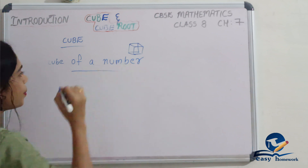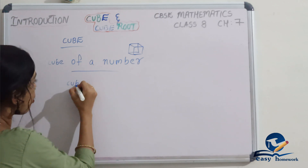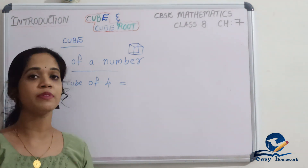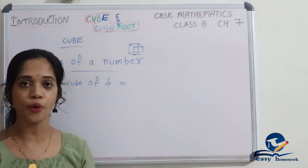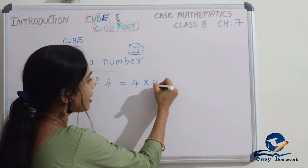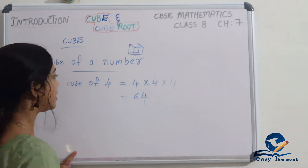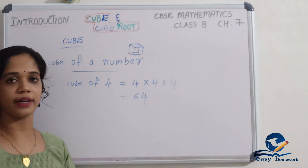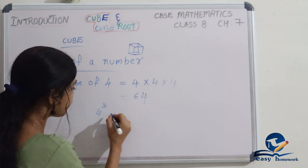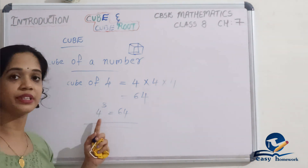How do you say a number is a cube? Let's say 4 is a cube. Cube of 4 — what does that mean? A number multiplied by itself 3 times is called its cube. So, cube of 4: 4 multiplied 3 times — 4 × 4 × 4 = 64. We denote it as 4 raised to 3, that is 64.